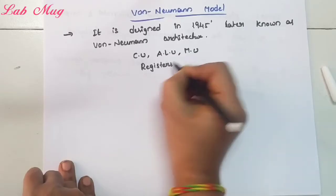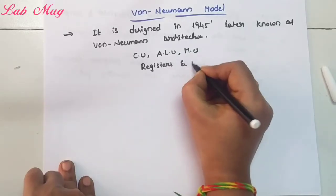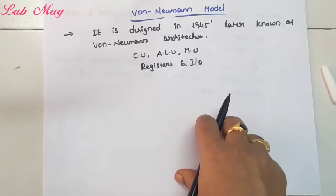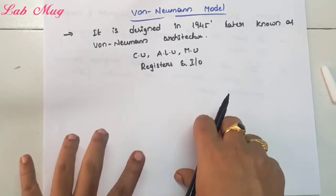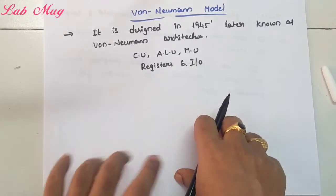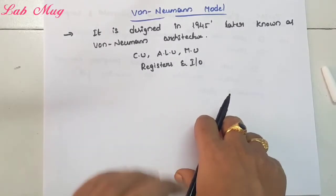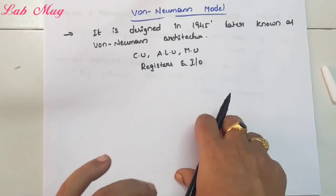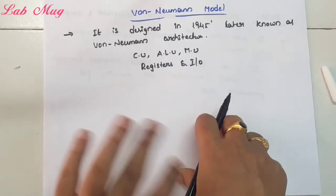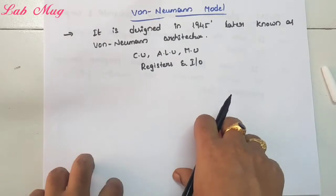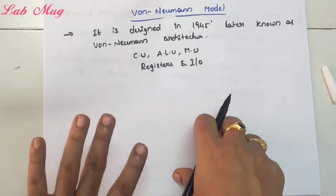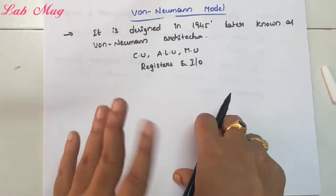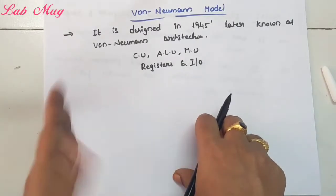Registers and input/output devices are also included. So in total, the Von Neumann model considers these partitions: control unit, arithmetic and logical unit, memory unit, registers, and input/output. Let us discuss this concept — it is obviously based on the stored program concept.